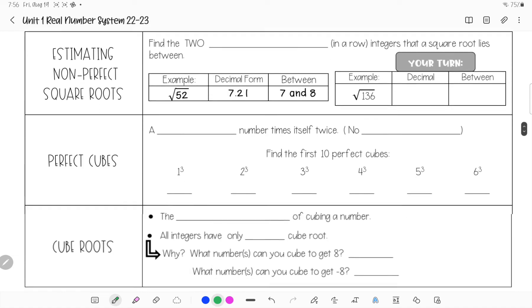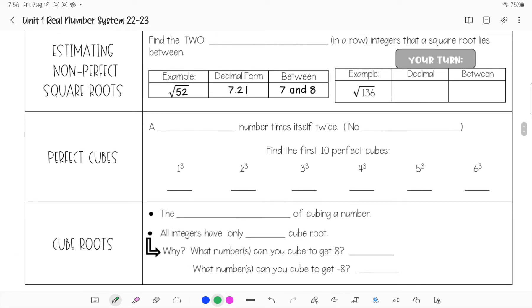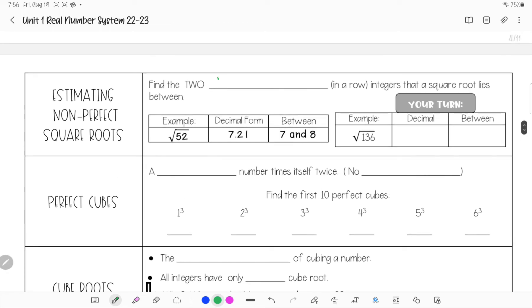All right, let's go to estimating non-perfect squares. So in a non-perfect square, it doesn't come out as a whole number. It comes out as a decimal, which means it's between two whole numbers. So you're going to find two consecutive, meaning two integers in a row. So like 1, 2, 2, 3, 3, 4. Those are all consecutive that a square root lies between. So it's what it lies between.